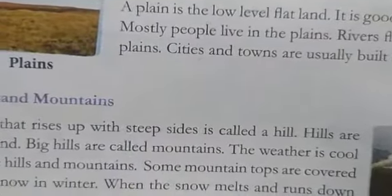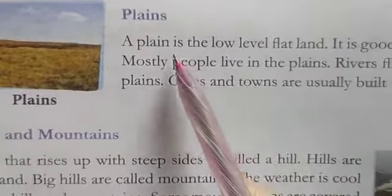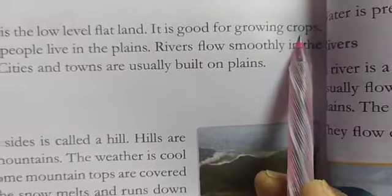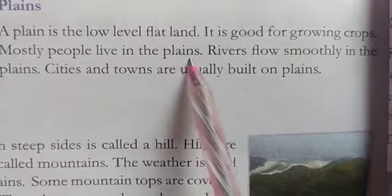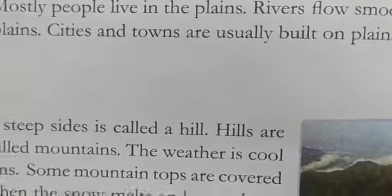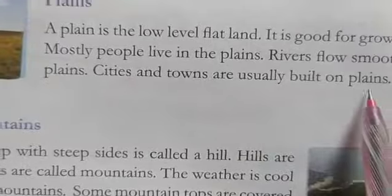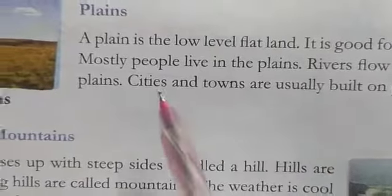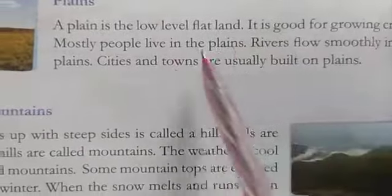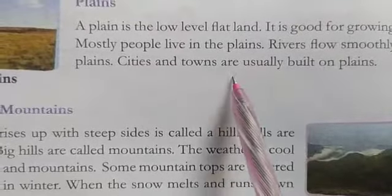Landforms are of different forms. Now we are going to learn about the plains. A plain is a low level flat land. It is good for growing crops. Mostly people live in the plains. Rivers flow smoothly in the plains. Cities and towns are usually built on plains. The area where we are living is called the plains — it is good for growing crops and we can build houses and live here.